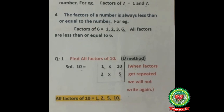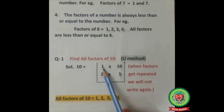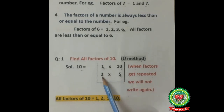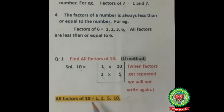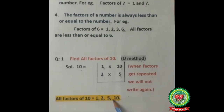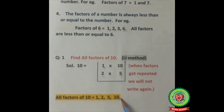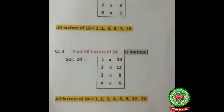Now, how do we write the factors? We start from 1: 1, 2 — then turn — 5, 10. So all factors of 10 are equal to 1, 2, 5, and 10.